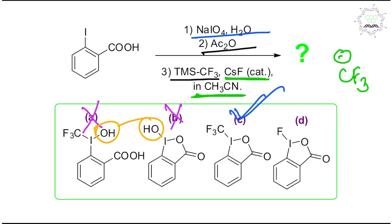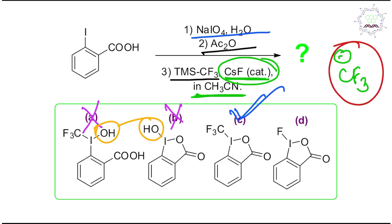Now let's compare C versus D. The cesium fluoride present will preferentially bind with silicon of TMS, and consequently CF3 minus will be released. CF3 minus is not that stable, but it is not that unstable either, so it will act as a nucleophile. It will not release fluoride minus under those conditions to give a difluorocarbene — that is not possible here. So CF3 acts as the nucleophile and option D is also eliminated.